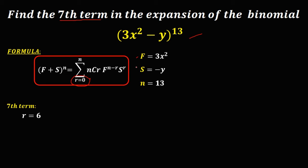Substitute these values into the formula. Starting from n choose r: n is 13, r is 6, so we have 13 choose 6, then times f — that's 3x squared — to the power n minus r, so 13 minus 6. Then for the second term, that's negative y to the power r, so r is 6.